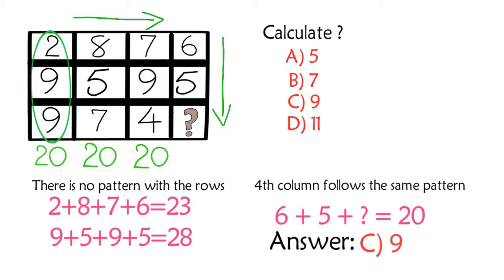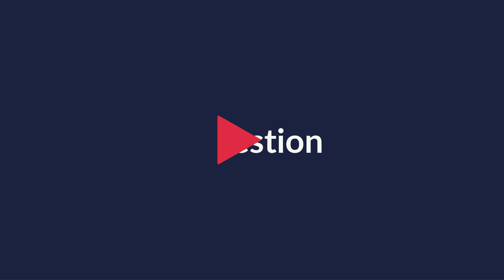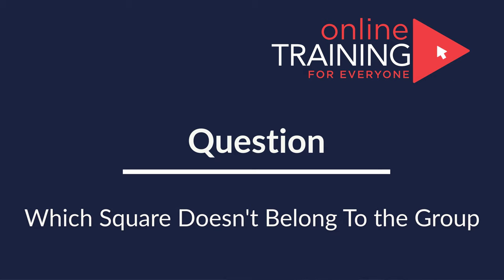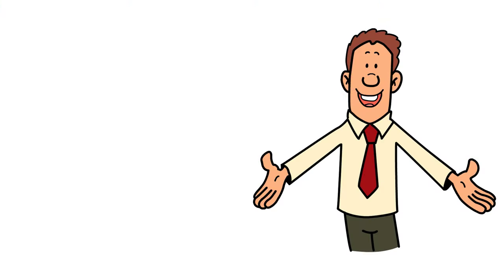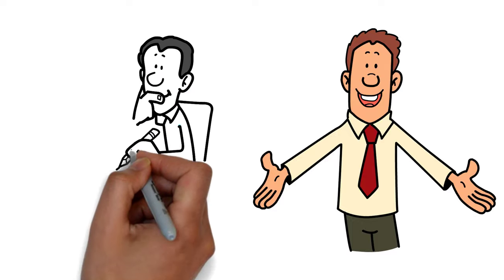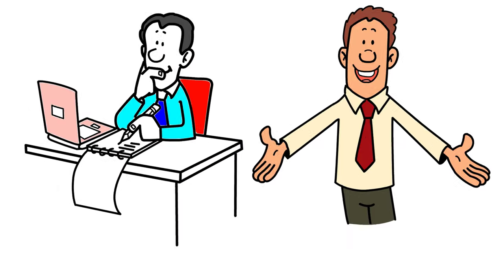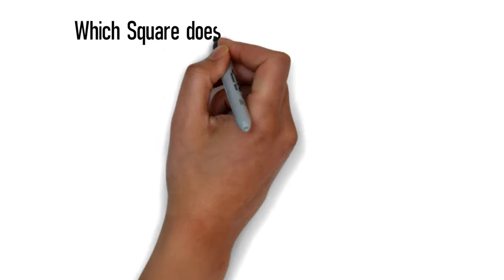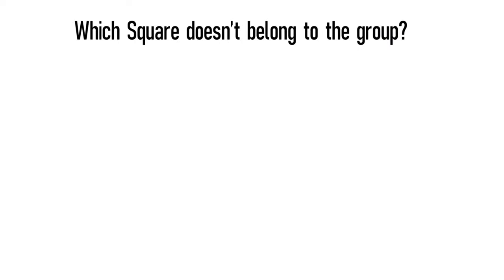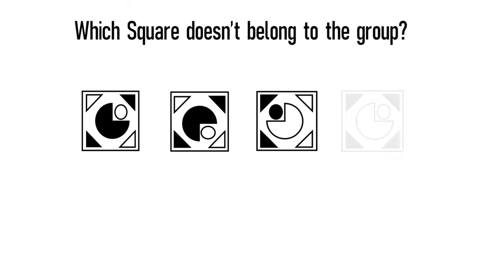Hopefully you figured it out and now know how to answer similar problems on the test. Typically when you get a problem you need to determine which object does not belong to the group. In this particular case, you need to determine which square doesn't belong to the group. You're presented with four different squares — choices A, B, C, and D.